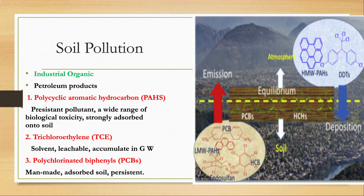Another industrial organic pollutant is PCB — not Pakistan Cricket Board, but polychlorinated biphenyl. Polychlorinated biphenyls are widely dispersed compounds and are one of the persistent organic pollutants. They are strongly adsorbed on soil particles but are now banned because they are very persistent in the environment.